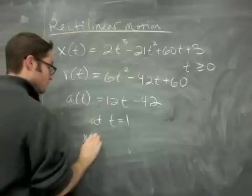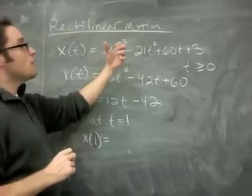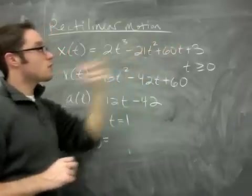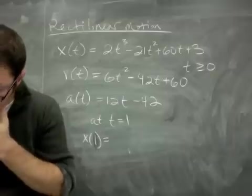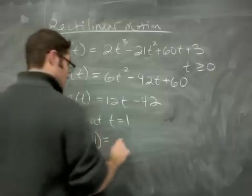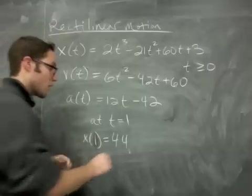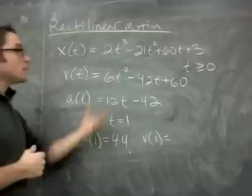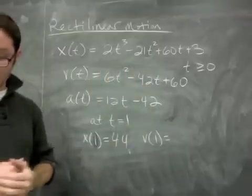So position at 1, x(1) equals 2 - 21. That's -19 + 60 + 3. What does that come out to? I did this before. 44. Just don't want to make a mistake. You guys can check me. Velocity after one second. Okay, so you do 6 times 1² - 42 times 1 + 60. And I got 24.